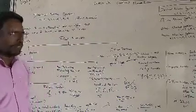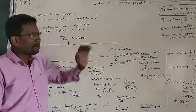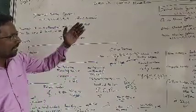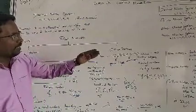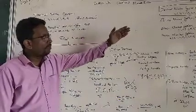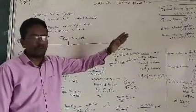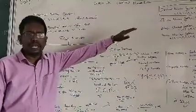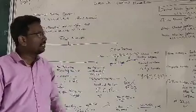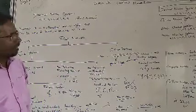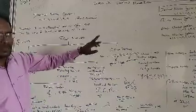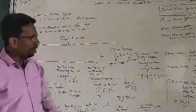In the number system, in general, four types are there. In the decimal number system, that is base 10, we use the digits 0 through 9. In the binary number system, that is base 2, we use 0 and 1.